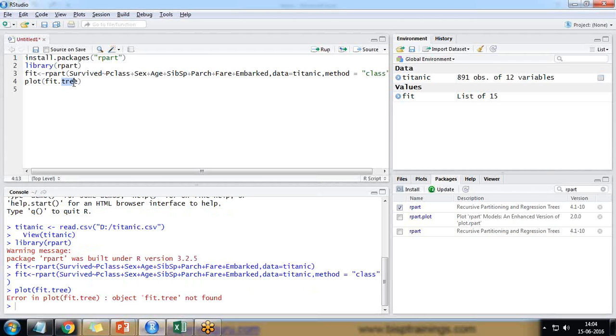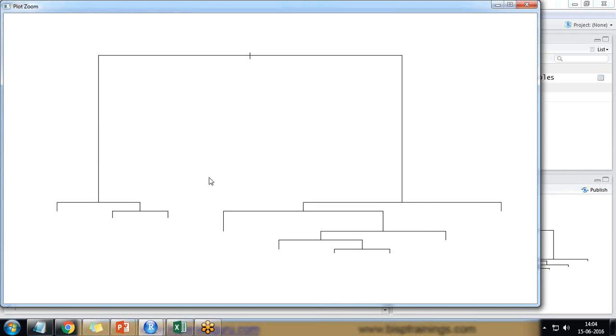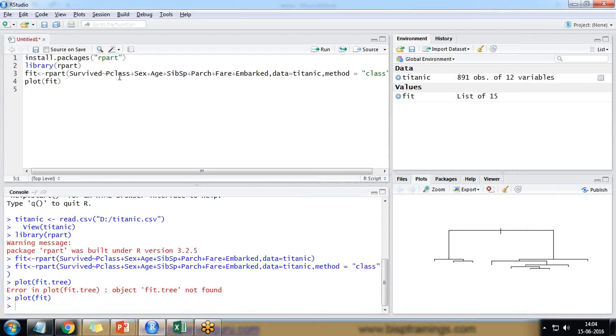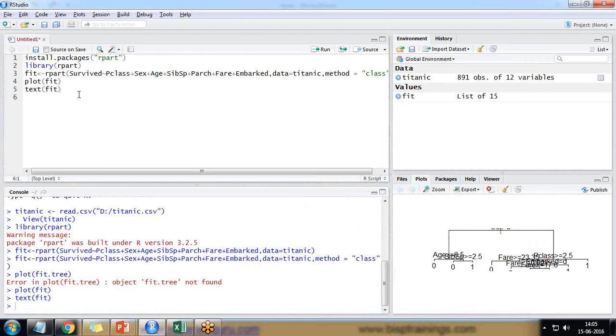You can see it has been plotted - the root node is created and then it gets divided based on certain conditions. But the values are not coming, so I write text, and it adds the values. You can see the average age greater than 6.5, SibSp is 2.5, average fare is 23.35, and so on.